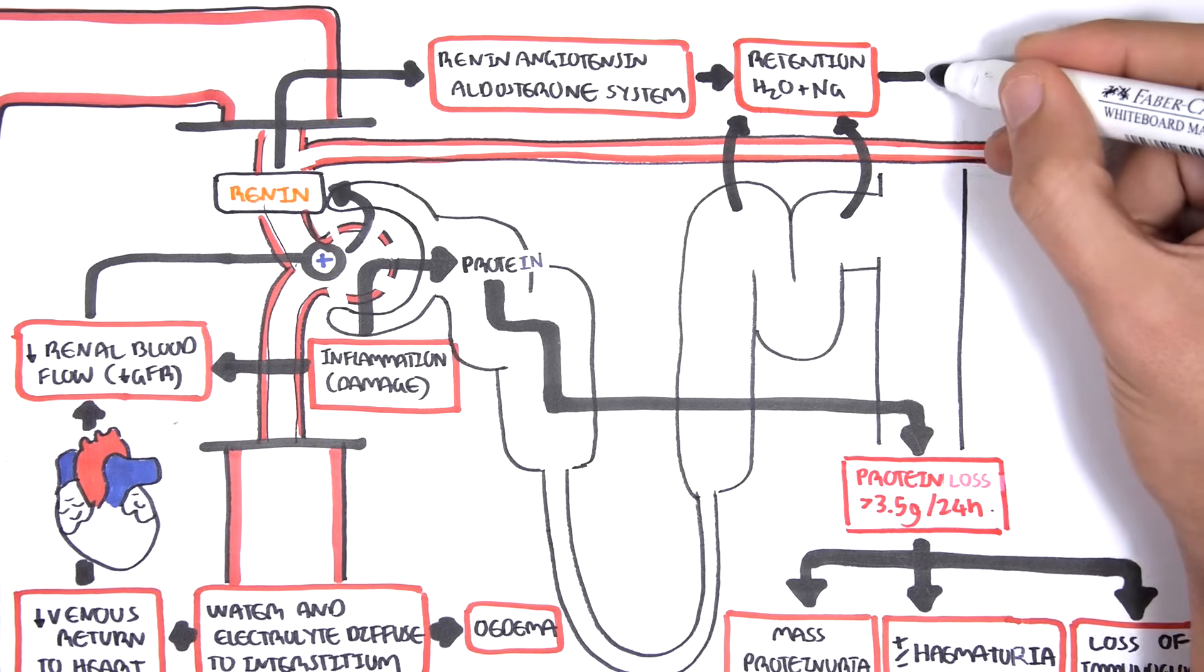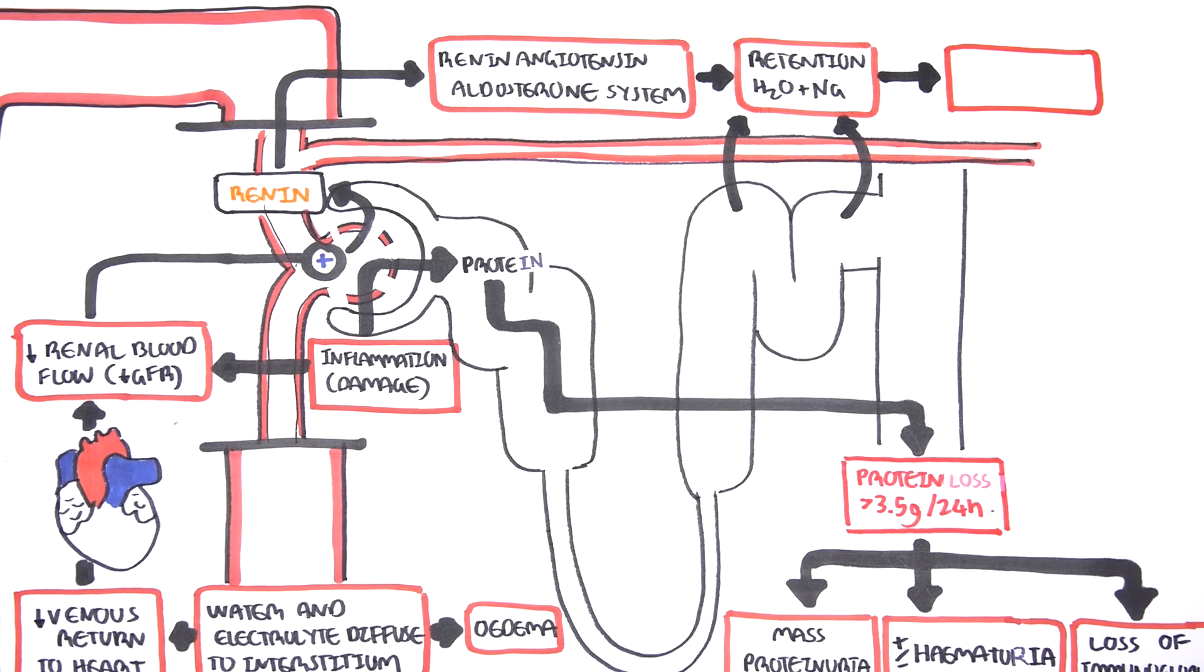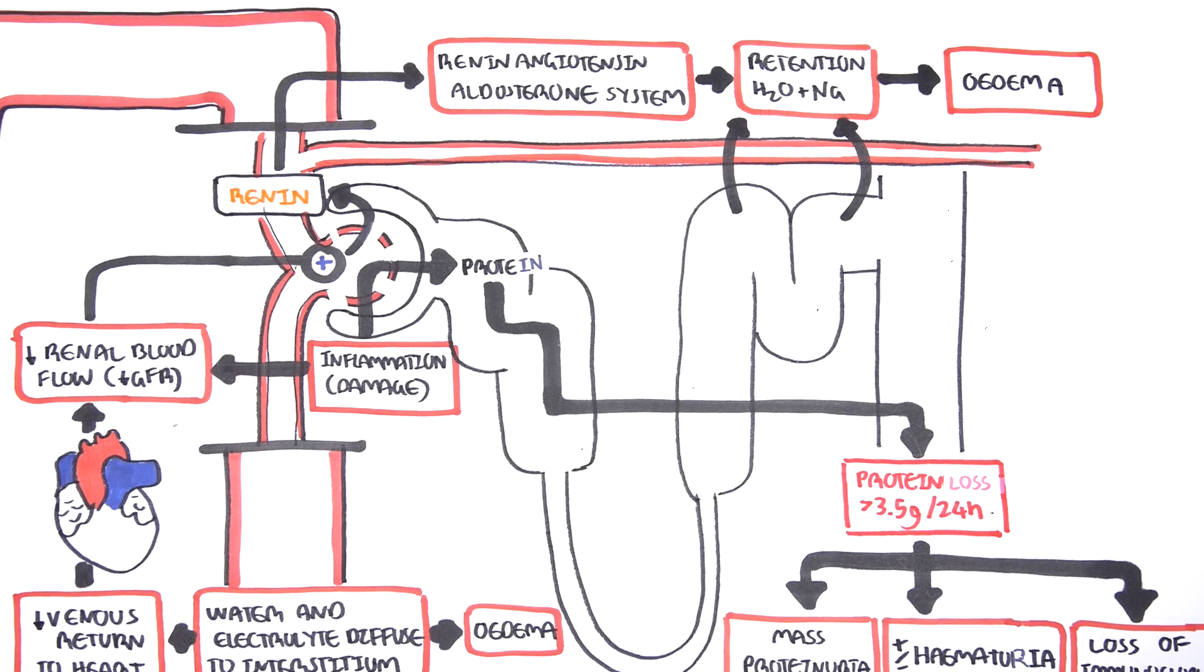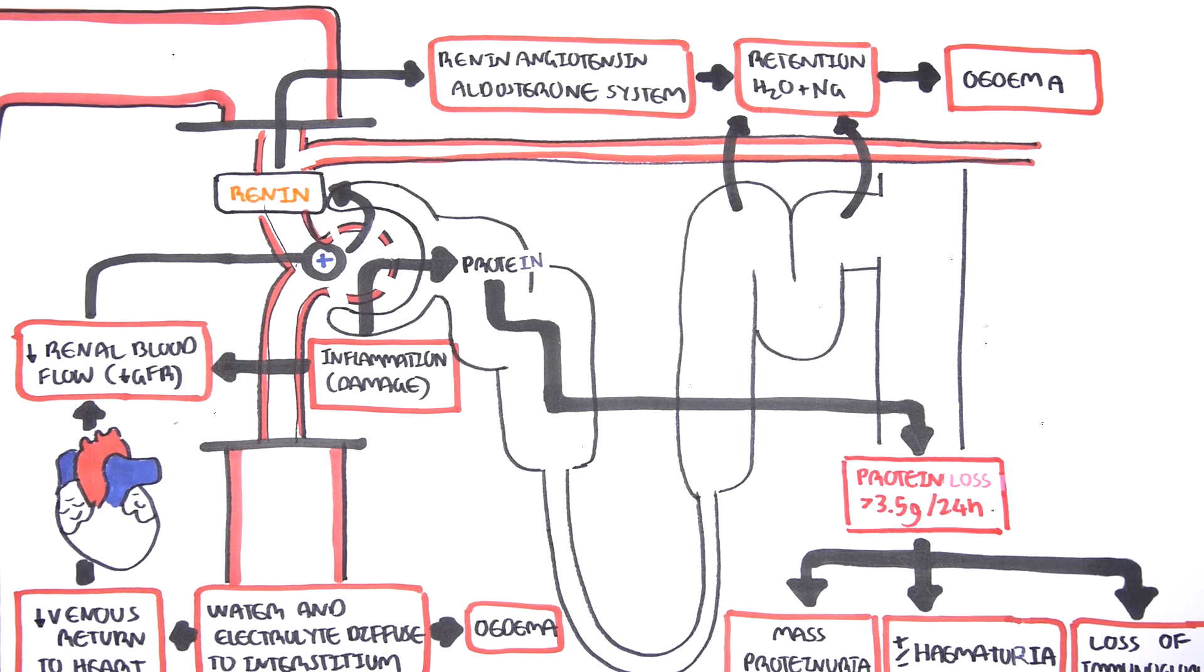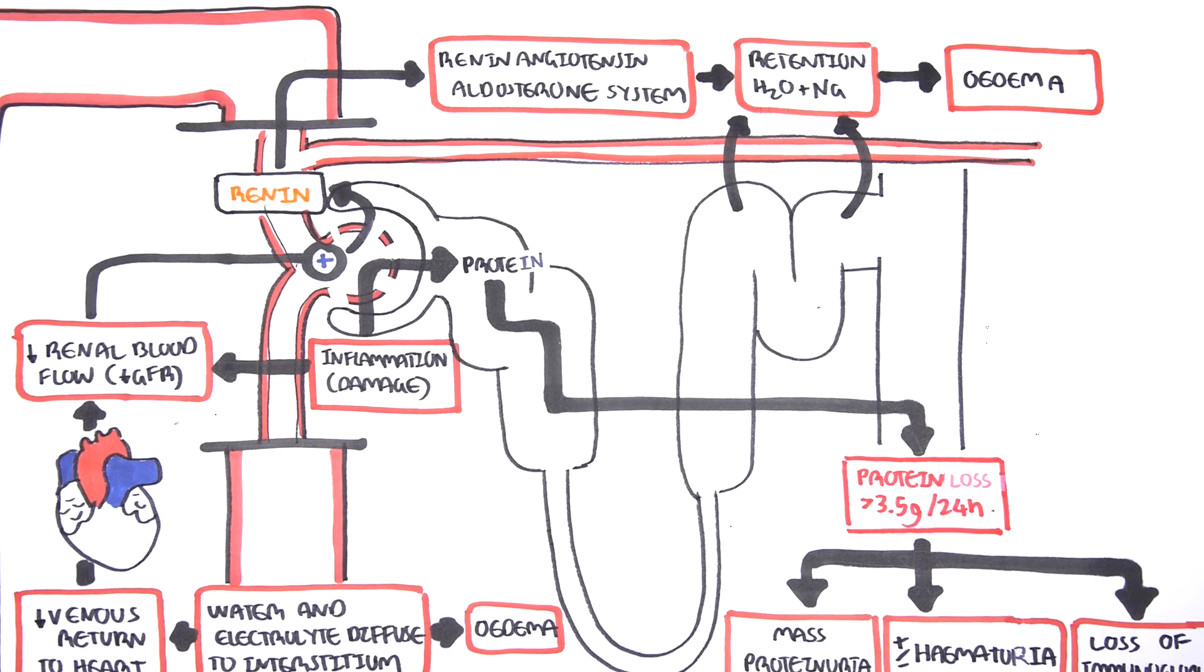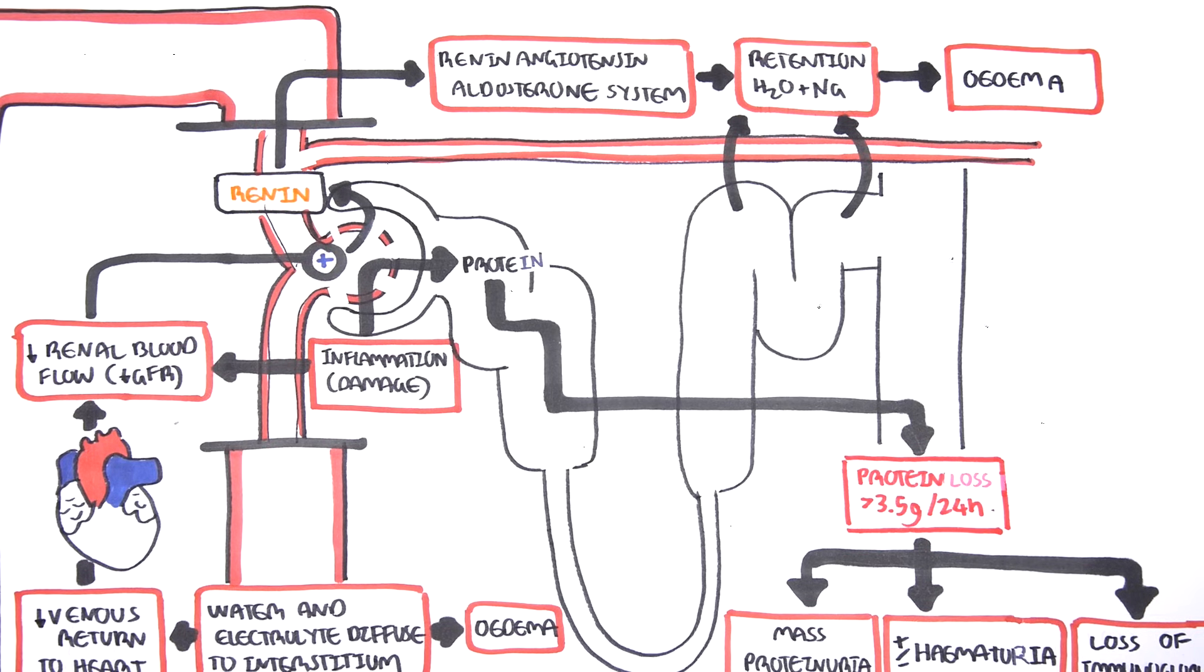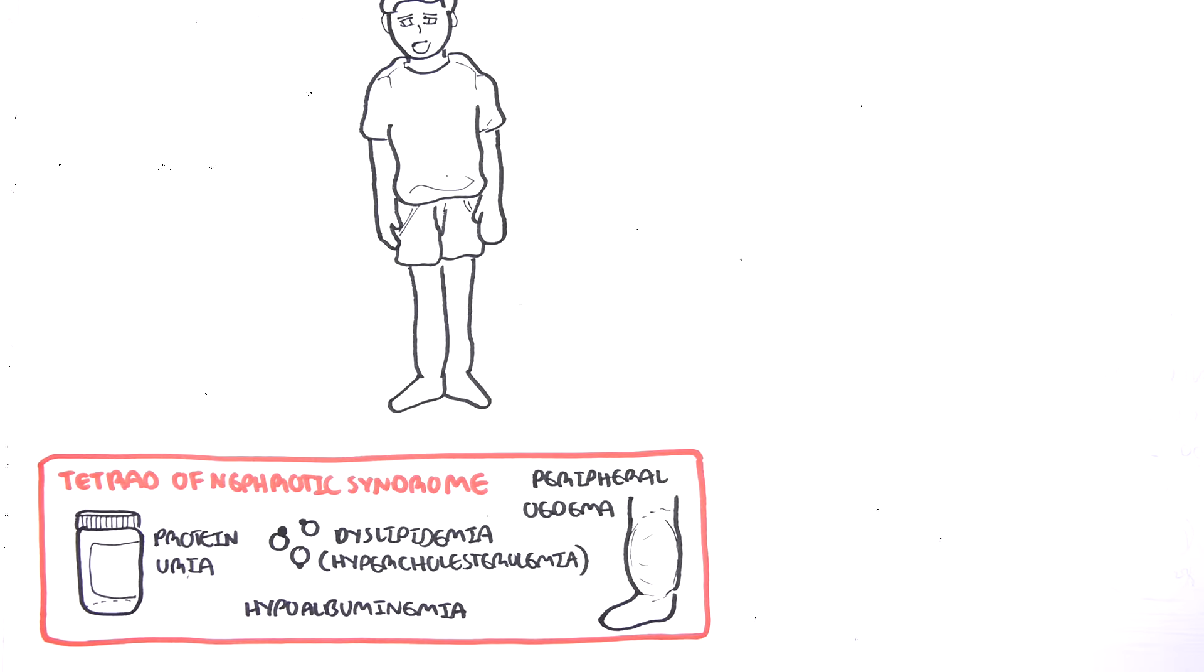However, this will eventually result in further edema because of the hypoproteinemia that is already occurring. In summary, we saw how proteinuria occurs due to inflammation in the glomerulus, which eventually leads to hypoalbuminemia, hypercholesterolemia, and peripheral edema. This is the tetrad seen in nephrotic syndrome.